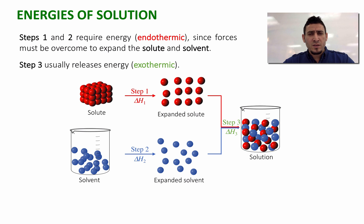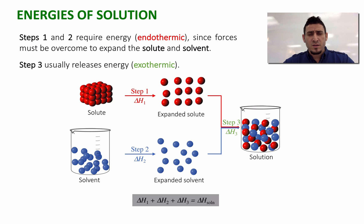Now what about the heat of the solution? The heat of the solution can be calculated by the sum of the energies involved in these three steps. So ΔH_solution is equal to ΔH1 plus ΔH2 plus ΔH3.